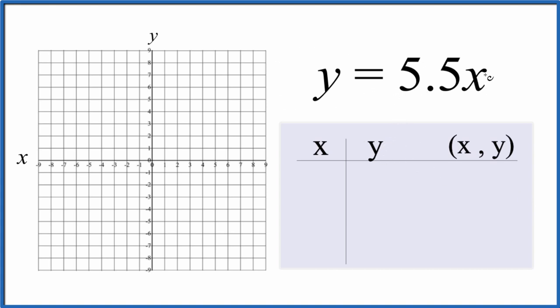I like to start out with 0 for x because 5.5 times 0, that's just 0. Then how about just 1? 5.5 times 1, that's 5.5.